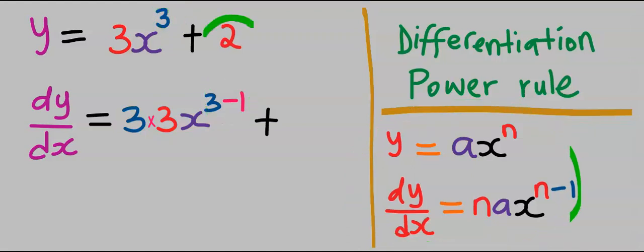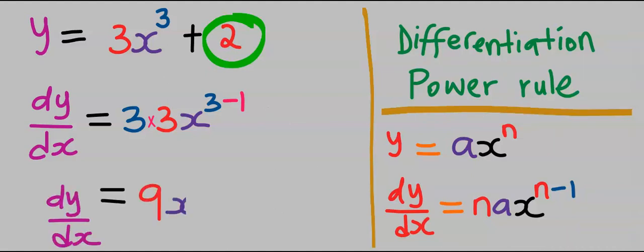Next, differentiate a constant. When you differentiate a constant, it is 0. Hence, we can let it out. And our dy dx is 9x squared.